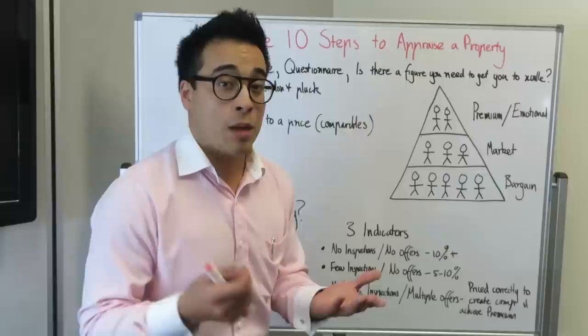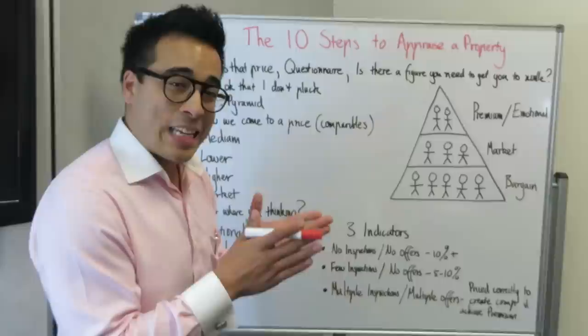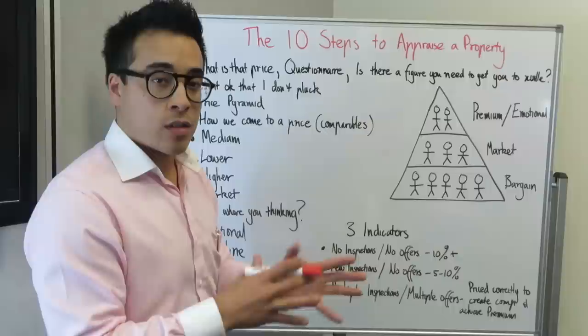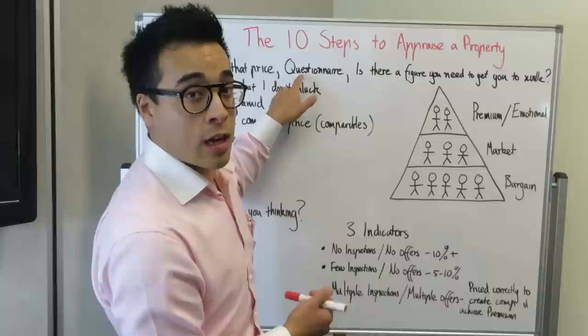We also have a questionnaire — the top 10 questions or so to ask a client. That's in our pre-listing pack before we go to the house, and the client ticks the boxes. One of the questions is: how much do you think your house is worth? And another is: is there a figure you need to get you to Xville? About 10 to 20% of clients fill out a price there — and that's gold.